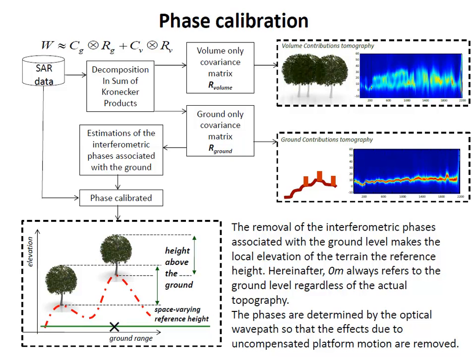Because the ground phase also includes the phase from platform motion, by removing it we achieve correct focusing in the vertical. Importantly, because we remove the phase associated with the ground from the original data, the local elevation of the terrain is flattened to zero meters. After this step, we always refer zero meters to the ground level regardless of the actual topography.